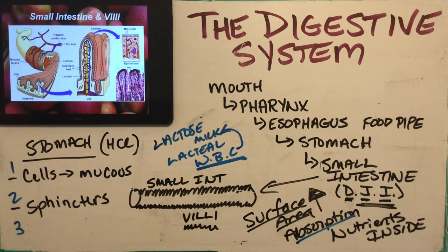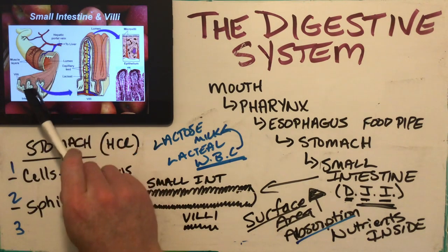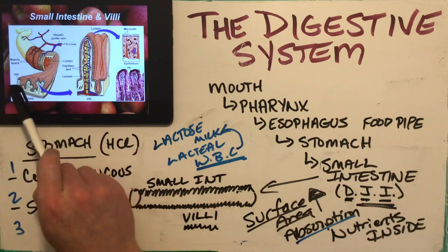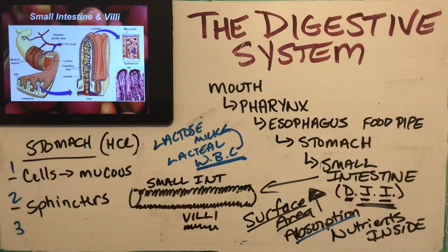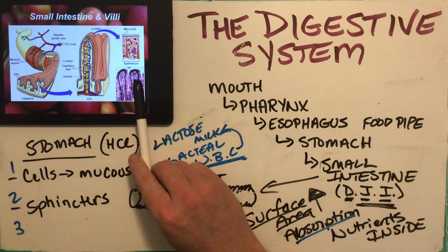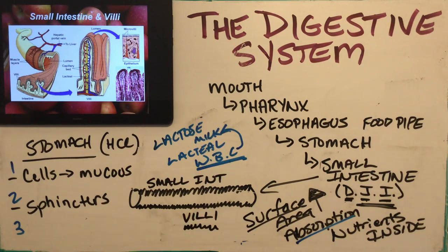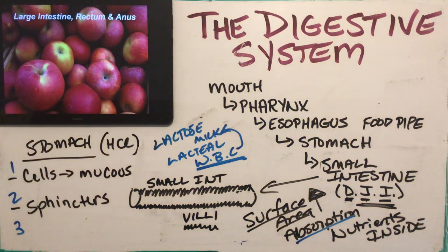Here's a picture of the small intestine showing the inner folds and all the villi clustered together. Scientists have also discovered that on the outer surface of each villus there are even smaller projections called microvilli — microscopic finger-like projections on top of the villi. This further boosts the surface area and maximizes our absorption of nutrients.